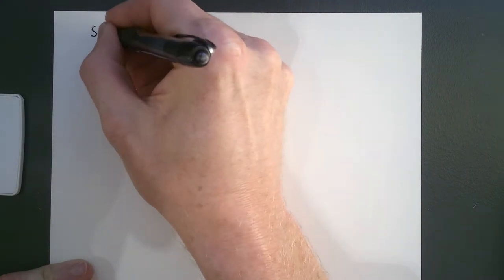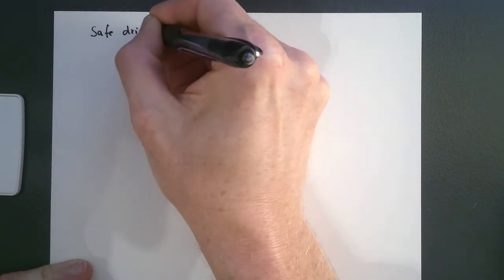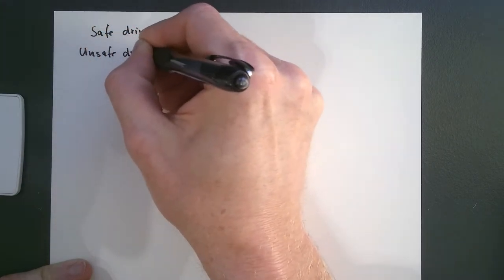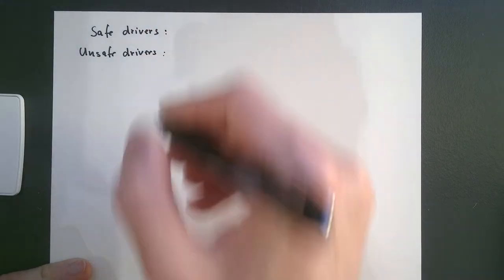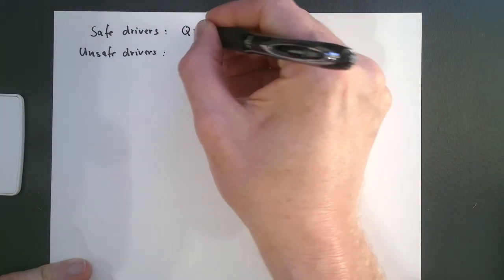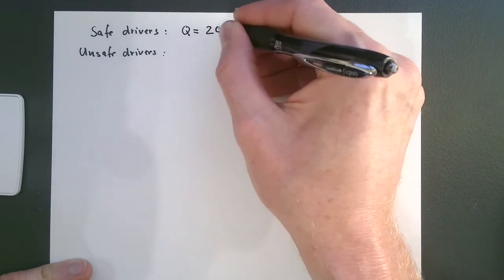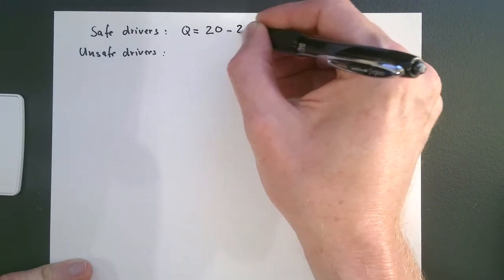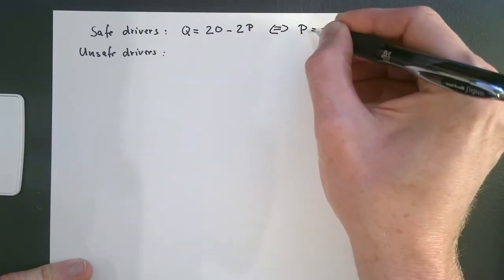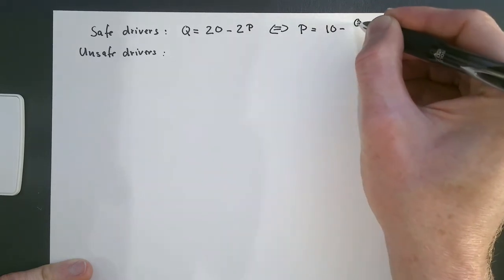Let us look at asymmetric information in the insurance market. Suppose that you have two types of drivers: safe drivers and unsafe drivers. They both have the same demand function, Q equals 20 minus 2P, which can also be rewritten as P equals 10 minus Q over 2.